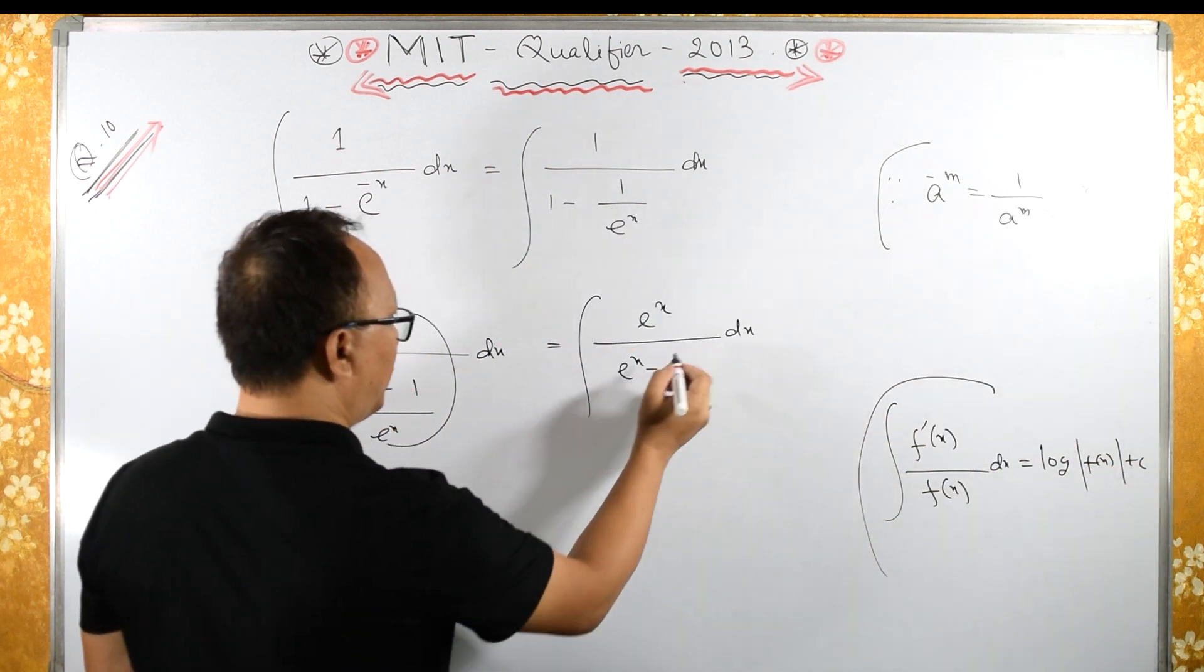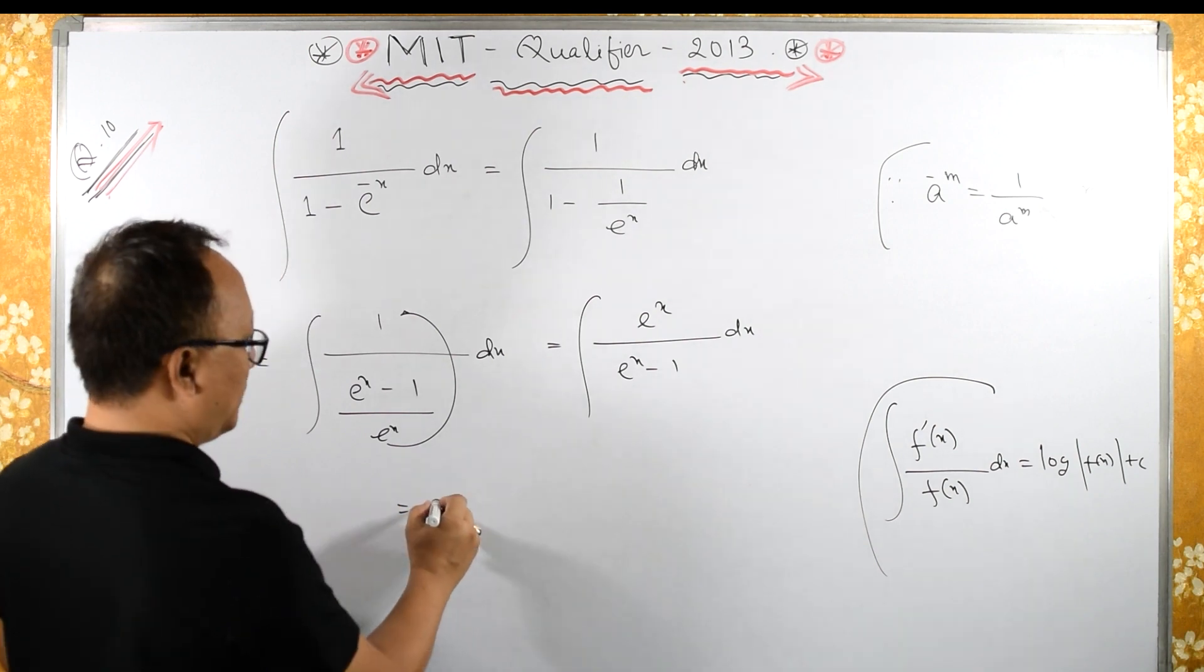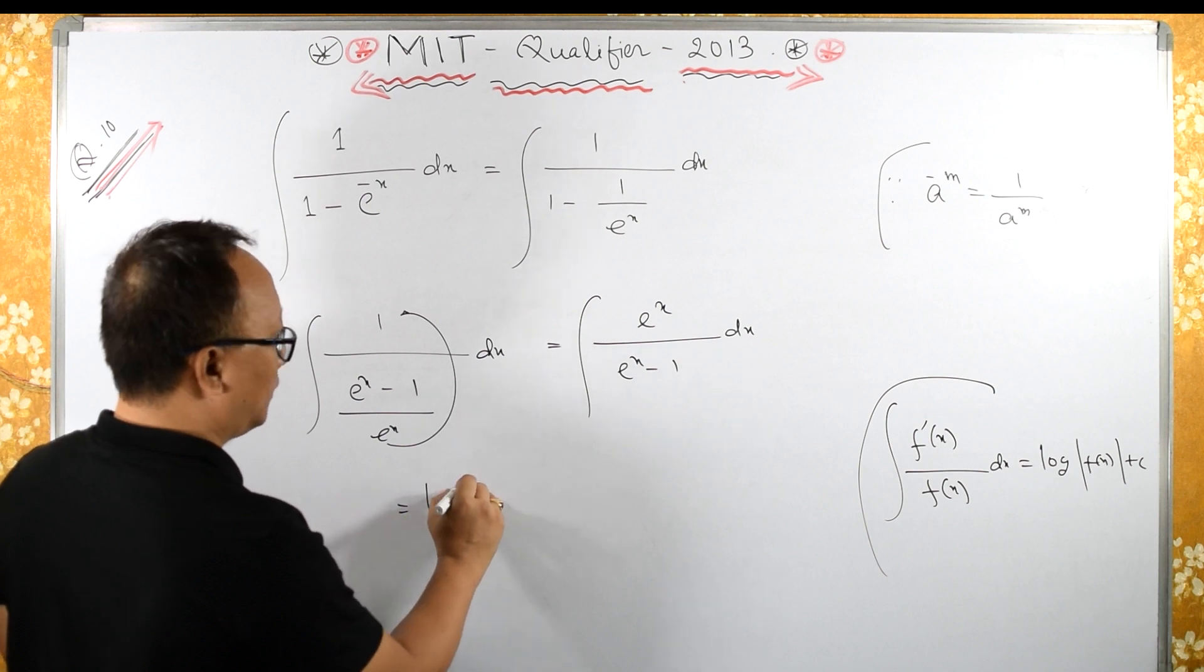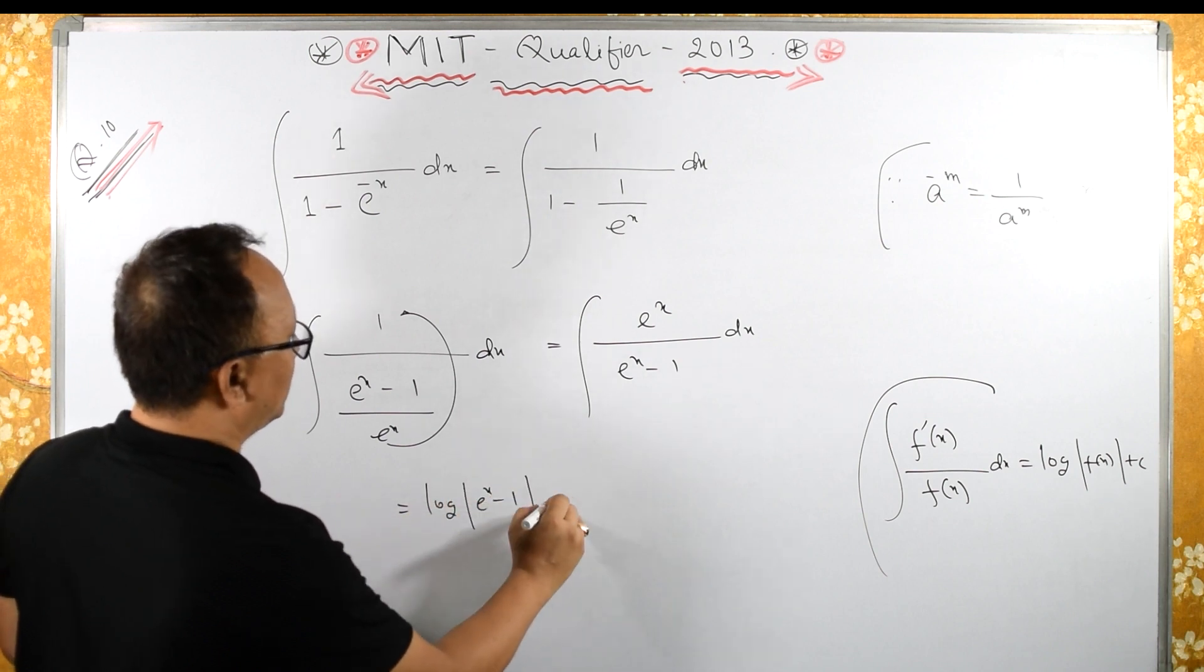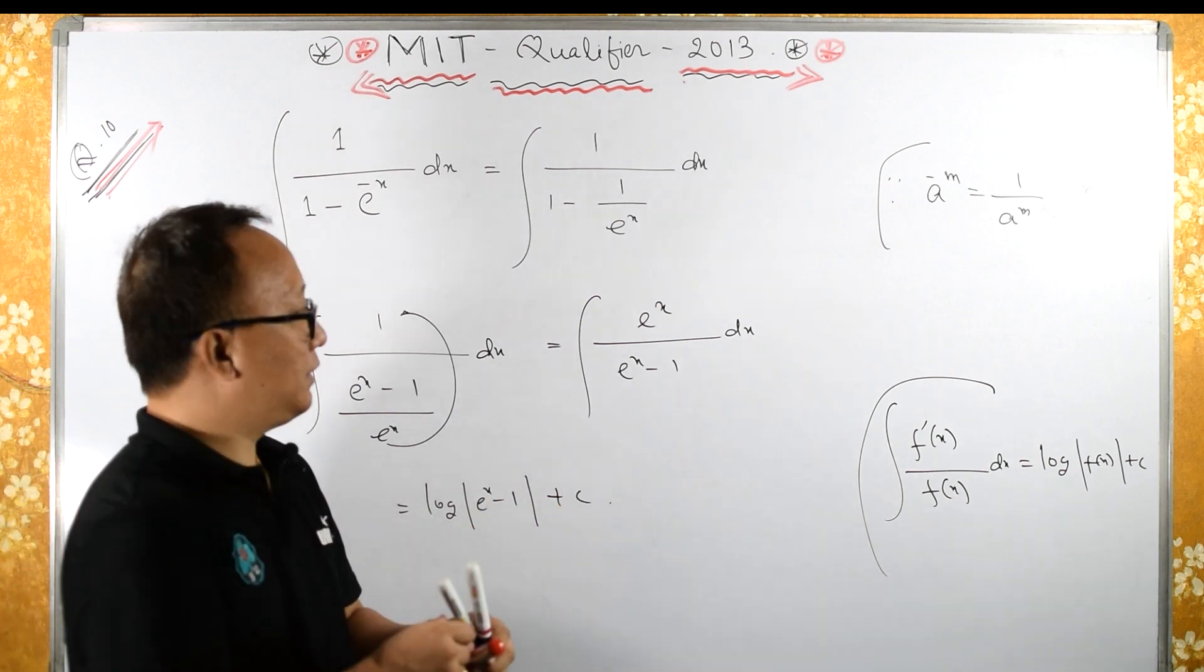By applying this formula over here, we have log of e raised to x minus 1 plus c. Otherwise, you can substitute.